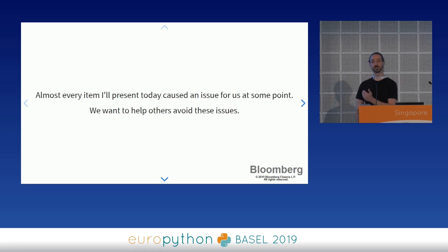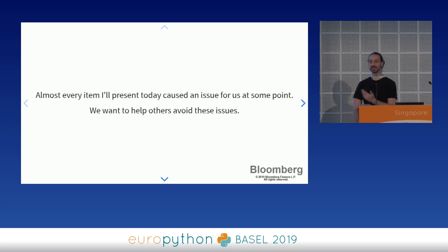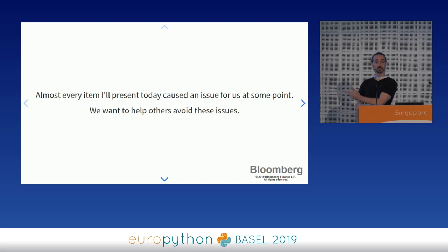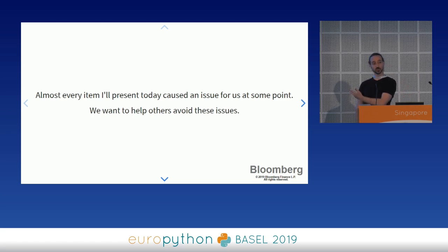Almost every item I'm going to present today, at least in the first third, caused an issue for us at some point of varying difficulty. They might seem like things that are like, wow, how did that hit you? Well, I have a very large team of developers — between 40 and 50 at any time — working on services hosted by UWSGI. If you're about to start a project with Flask or Django or anything, you should consider UWSGI as your host and use this as a reference.